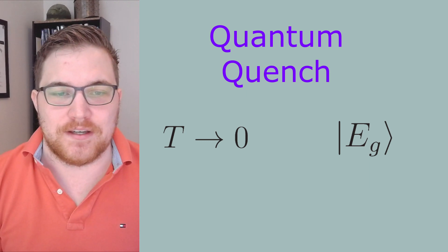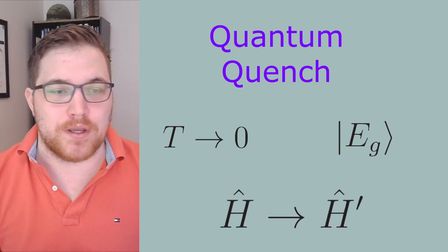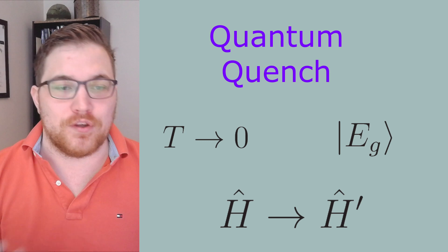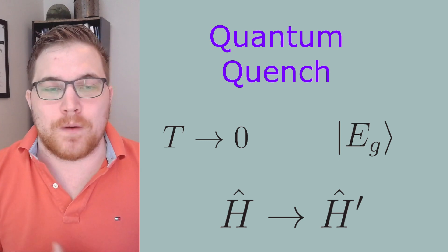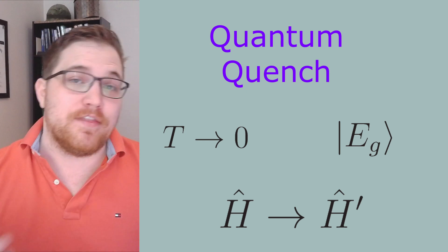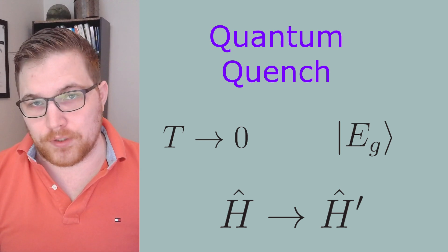If we then instantaneously changed the Hamiltonian that governed our system, say by changing an applied field, then our ground state will no longer be an eigenstate of the new Hamiltonian, and thus our system will no longer be in equilibrium.